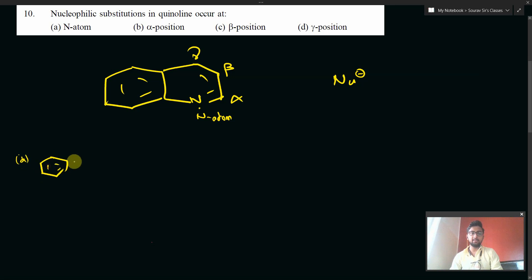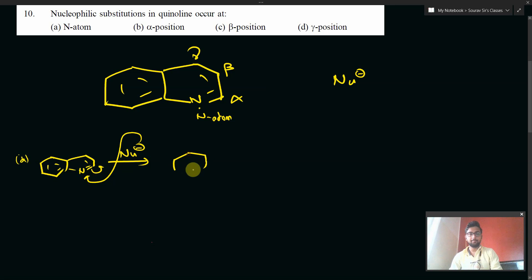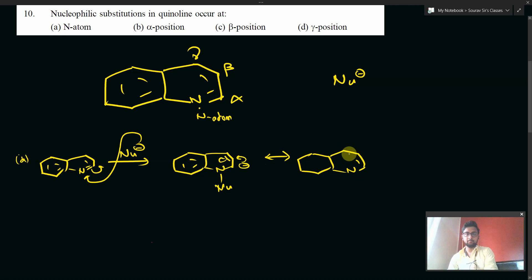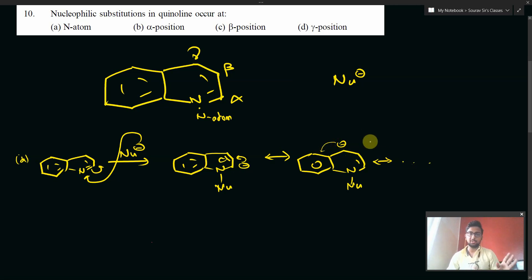First, let's consider attack at the N atom. We take the nucleophile and attack it over the N atom — this bond will open up, we get Nu attached and a minus charge forms here. This minus charge can go into delocalization, giving us resonance structures, and the resonance extends into the ring giving all kinds of canonical structures.